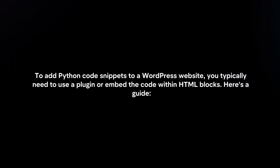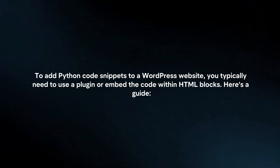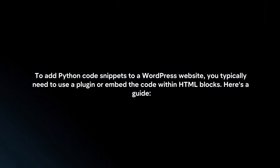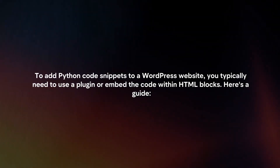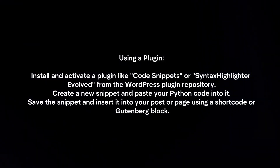To add Python code snippets to a WordPress website, you typically need to use a plugin or embed the code within HTML blocks. Here's a guide. Using a plugin: